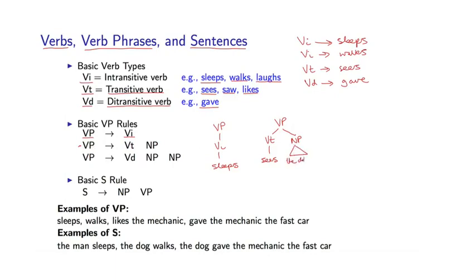So I could have sees, and then finally if we look at this ditransitive rule, I can have a verb phrase which is something like the following. So VD gave, so now I have two noun phrases following the verb, and the first one might be the dog, the ball. Notice that a verb phrase is generally made up of some verb followed by zero or more noun phrases. Intransitive verb there are zero noun phrases, transitive there's one, ditransitive there are two different noun phrases.